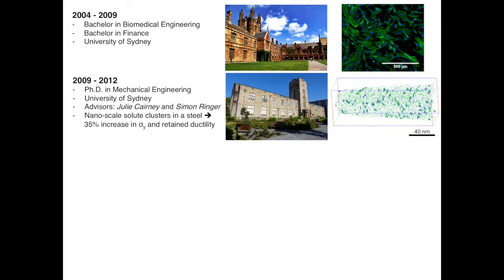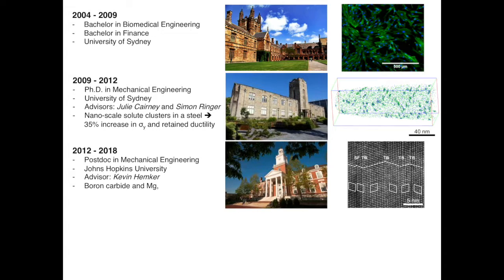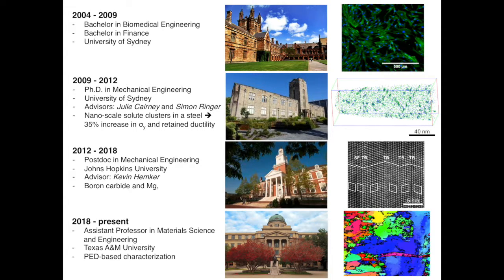After my PhD, I joined Professor Kevin Hamker's group at Johns Hopkins University. I was the in-house TEM person, using TEM as a tool to study deformation mechanisms in boron carbide and magnesium. In 2018, I joined the department of material science and engineering at Texas A&M as a microscopy faculty. At Texas A&M, we use a special TEM technique called precession electron diffraction to study deformation and phase transformation in materials.